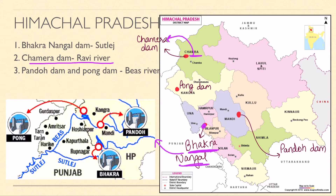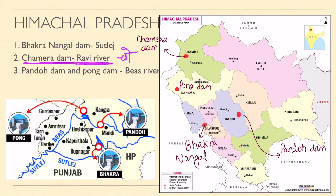Chamba is in Himachal Pradesh, so Chamera Dam is in Himachal Pradesh. Chamera Dam is on the Ravi River. To remember this, use the trick: 'Chor' - Ch for Chamera and R for Ravi. Remember 'Chor came to Himachal Pradesh' - Chamera on Ravi.